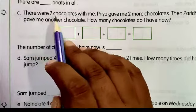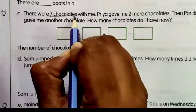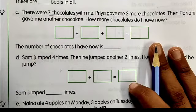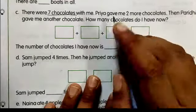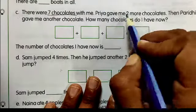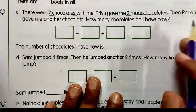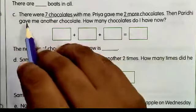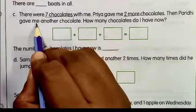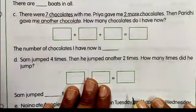There were 7 chocolates with me — yani ki mere paas 7 chocolates hain. Now, Priya gave me 2 more chocolates — mujhe Priya ne 2 chocolates aur dhi. Then Paridi gave me another chocolate — yani ki Paridi ne bhi mujhe 1 chocolate aur di.